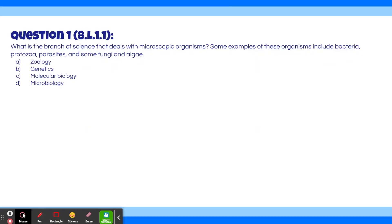Okay, with all that being said, let's get into the first question. Question 1: What is the branch of science that deals with microscopic organisms? Some examples of these organisms include bacteria, protozoa, parasites, and some fungi and algae. A, zoology. B, genetics. C, molecular biology. D, microbiology.